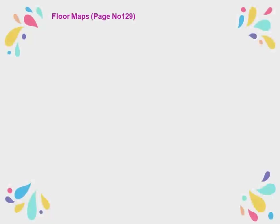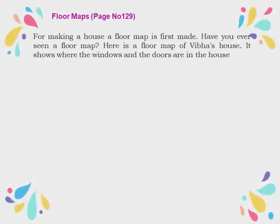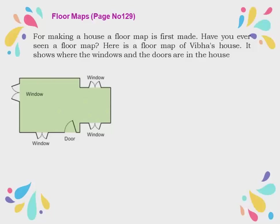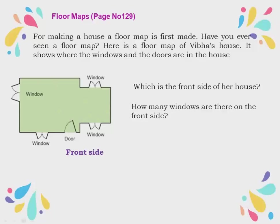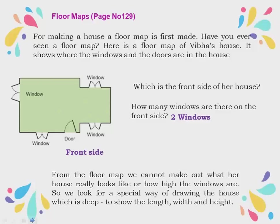Let's begin with floor maps on page number 129. For making a house, a floor map is first made. Here is a floor map of Vibha's house. It shows where the windows and the doors are. The floor map shows how the house looks from the top — where the doors and windows are, which is the front side. The front side is where the door is, and you can see two windows on the front side. From the floor map we cannot make out what the house really looks like or how high the windows are.